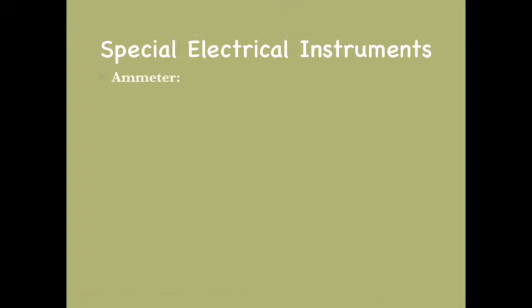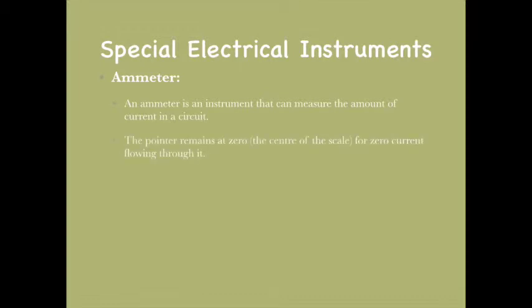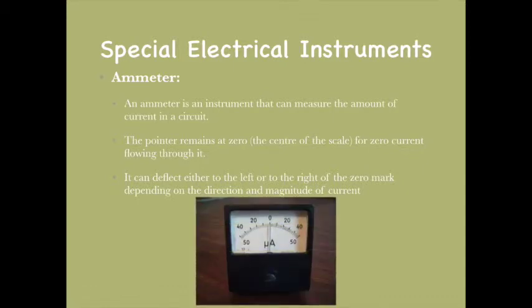The second instrument is the ammeter, which is an instrument that measures the amount of current in a circuit. The pointer remains at zero for zero current and can deflect either to the right or left of the zero mark depending on the direction and magnitude of current. A diagram of the ammeter is provided.